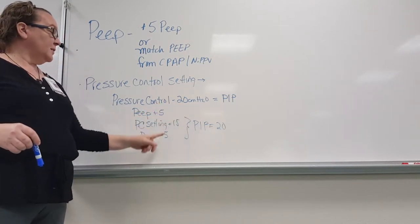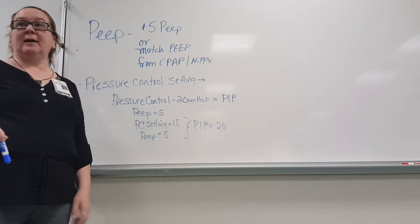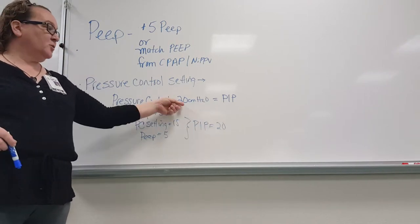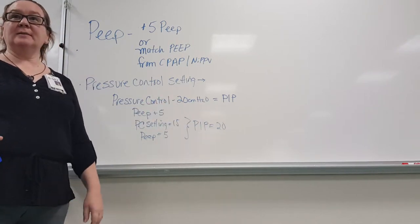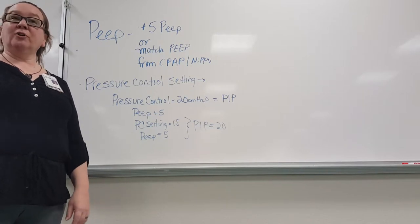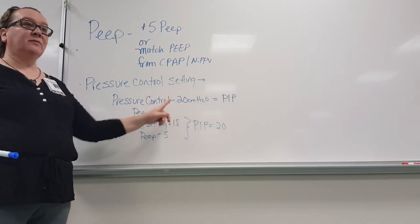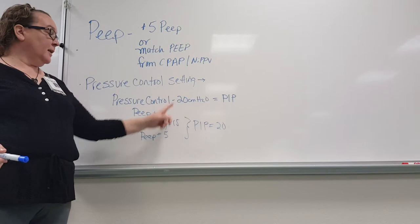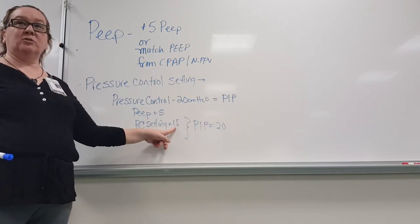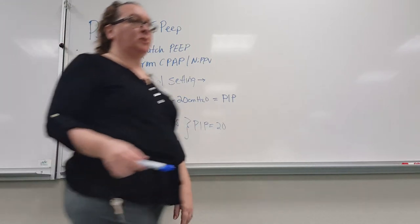If you do it differently and put 20 in as the pressure control setting on those vents, your PIP is going to equal 25 when you're supposed to be at 20. So if you're on the Draeger, you dial in 20. Every other vent: the ordered pressure control minus the PEEP equals the pressure control setting you enter to achieve the pressure the doctor ordered.